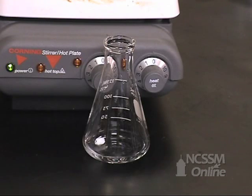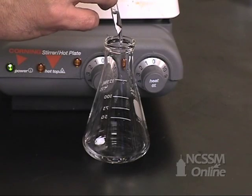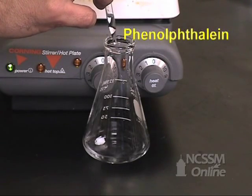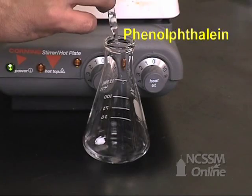We are going to use phenolphthalein as our acid-base indicator, so we are going to add a few drops of phenolphthalein. The solution is acidic, so the solution is colorless at this point.